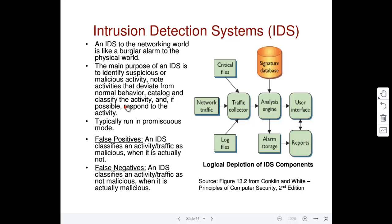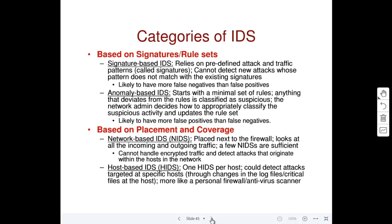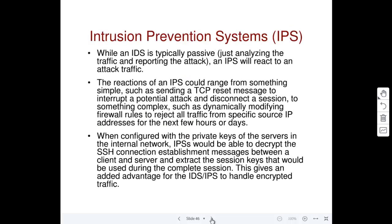IDS is typically considered to be passive, in the sense that it will primarily do detection. It will detect the attack but not respond to it. Later there is something called an intrusion prevention system — it is better to call it a prevention system — and that will kind of respond to the attack.